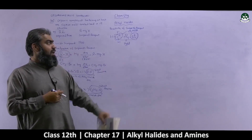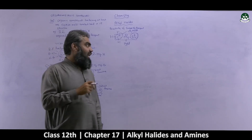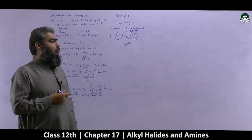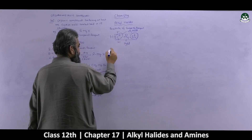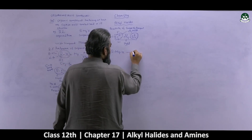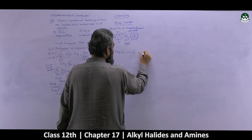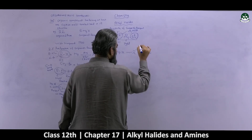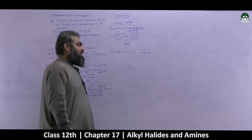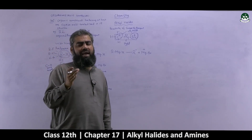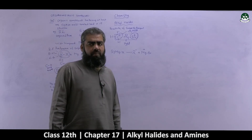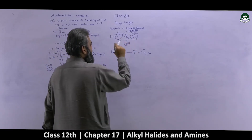After understanding the charges, we need to understand where the bond will cleave when this molecule is involved in a reaction. In R-Mg-X, the covalent bond present between magnesium and carbon cleaves, resulting in the formation of positive and negative ions. Always remember: in Grignard's reagent, the bond between magnesium and the alkyl group cleaves, producing positive and negative ions because of the partial charges present.